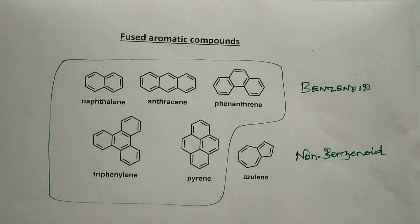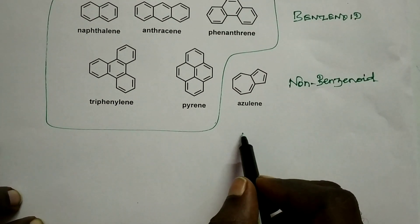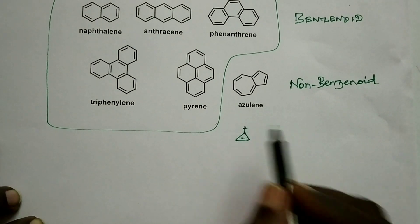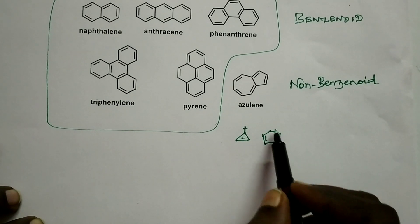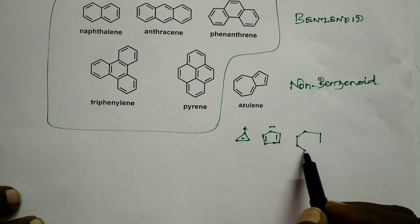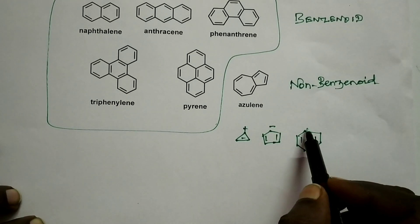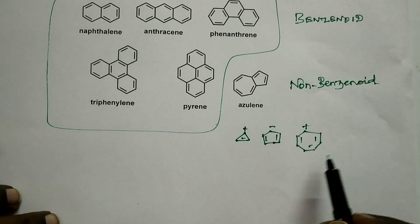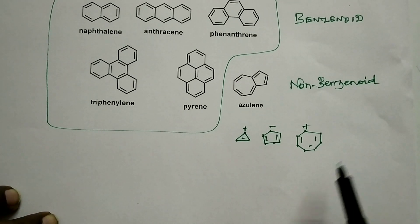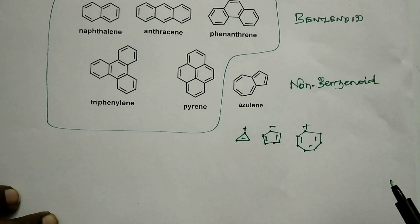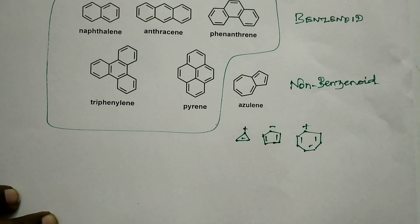There are many other non-benzenoid rings: cyclopropenyl cation, cyclopentadienyl anion, cycloheptatrienyl (tropylium) cation, and azulene. Except [6]annulene — which is nothing but benzene — all the annulenes studied in the previous videos are examples of non-benzenoid aromatic systems.